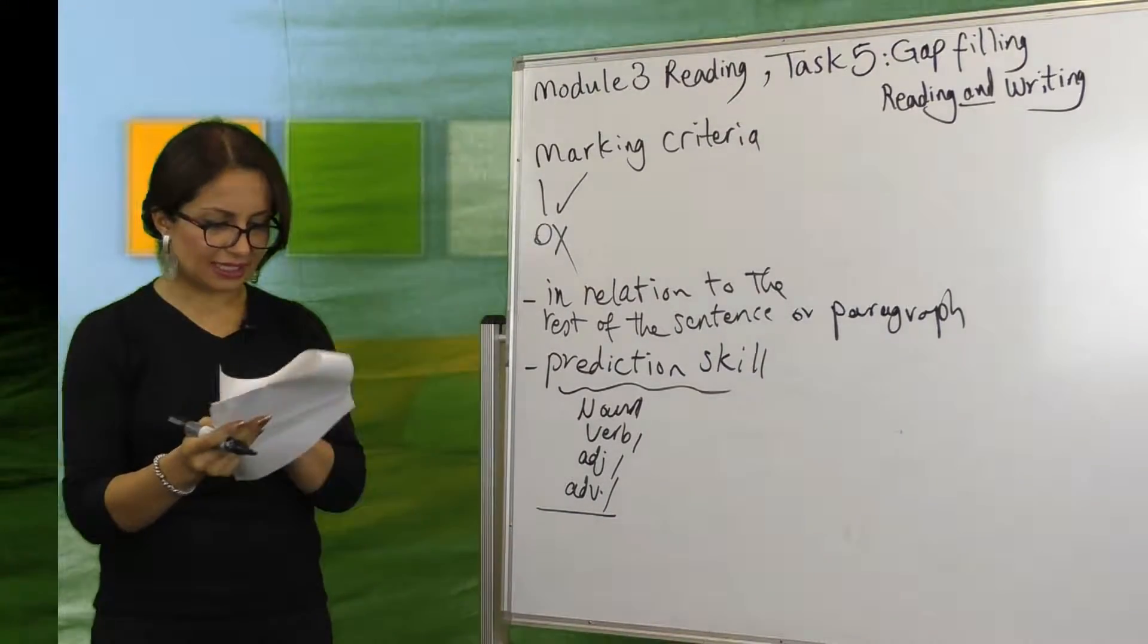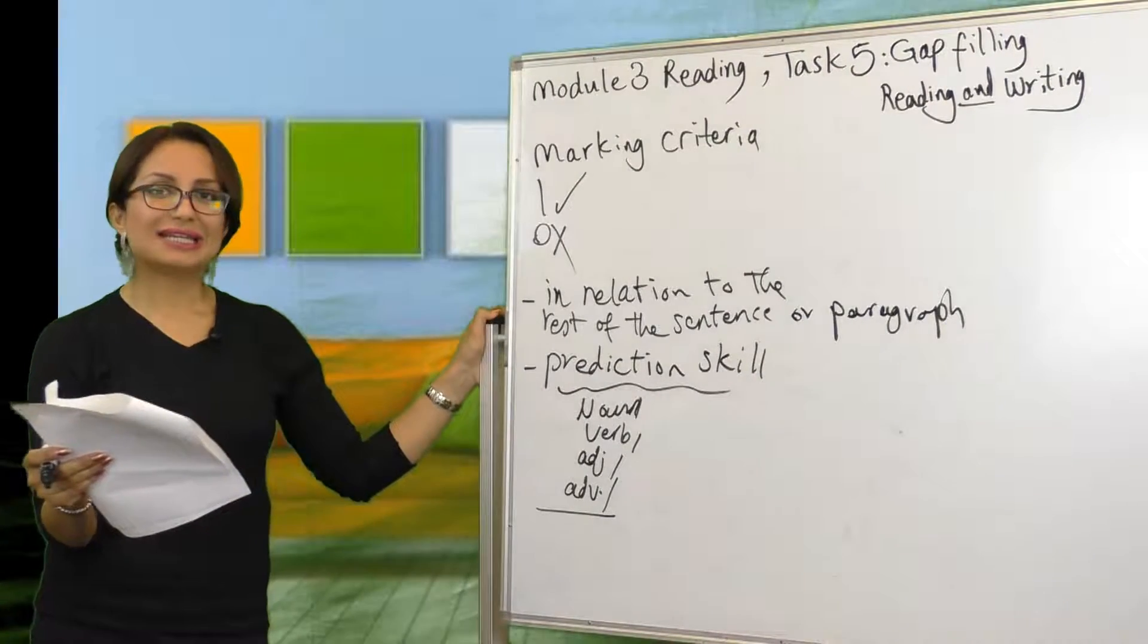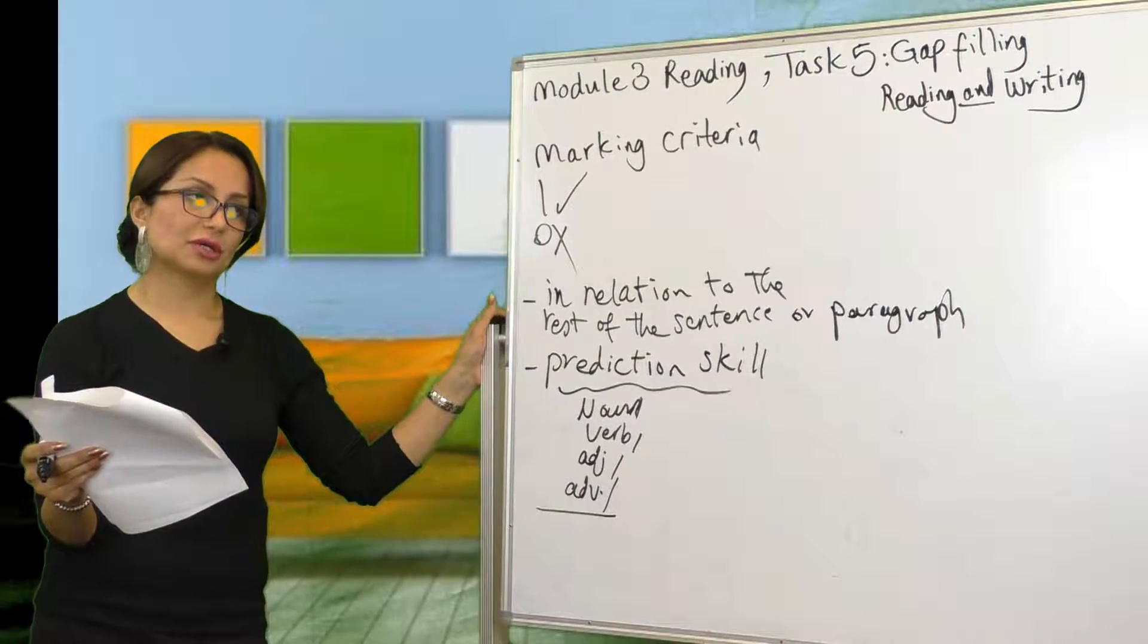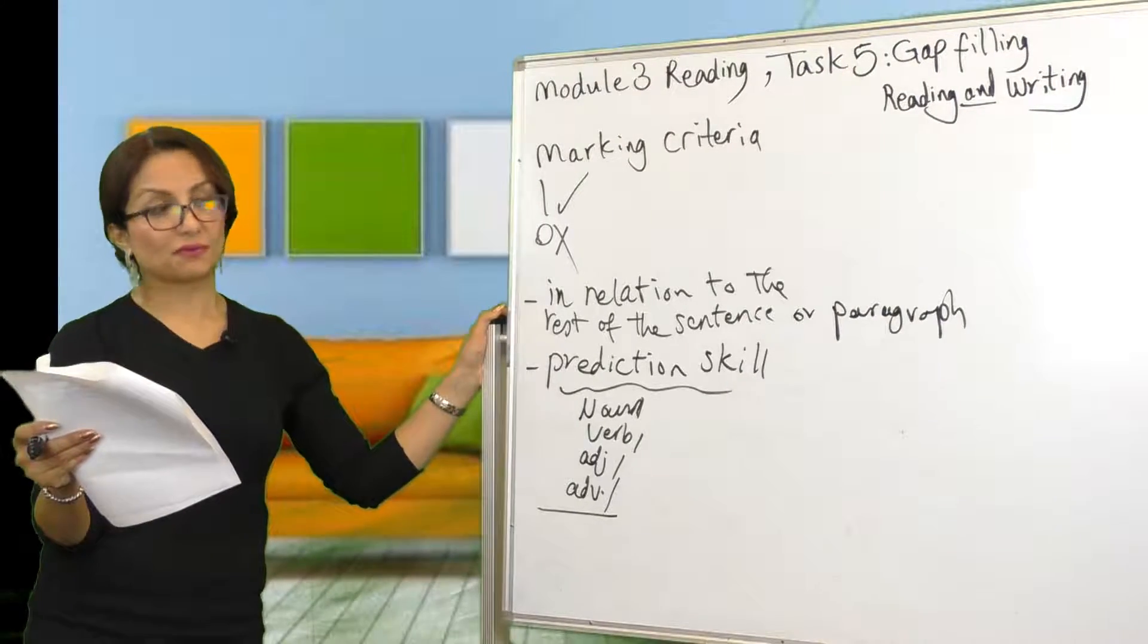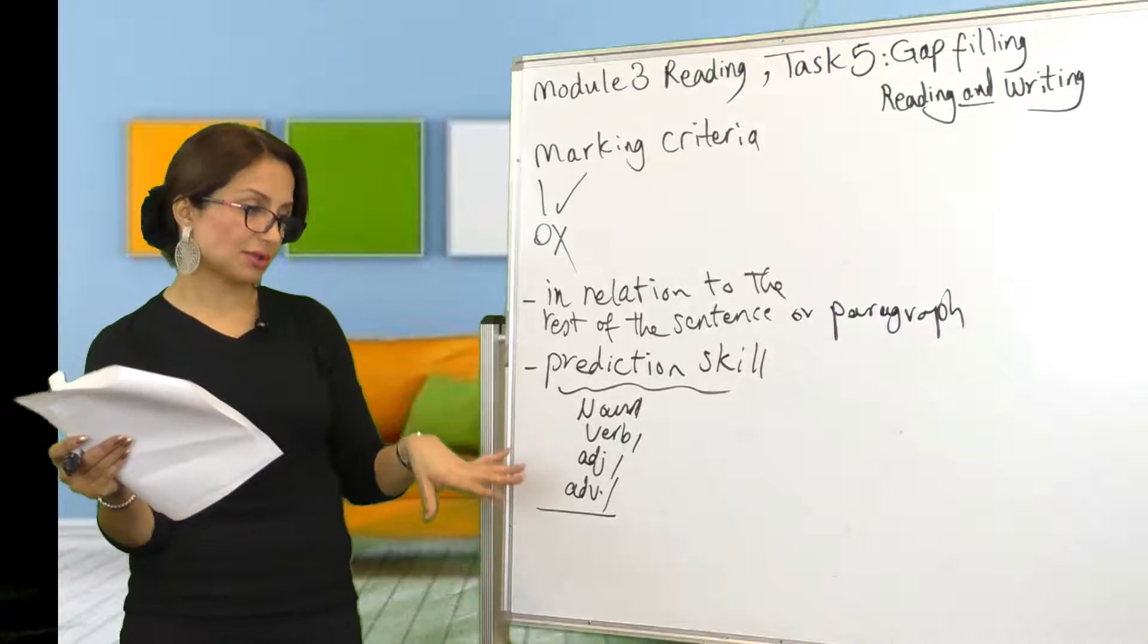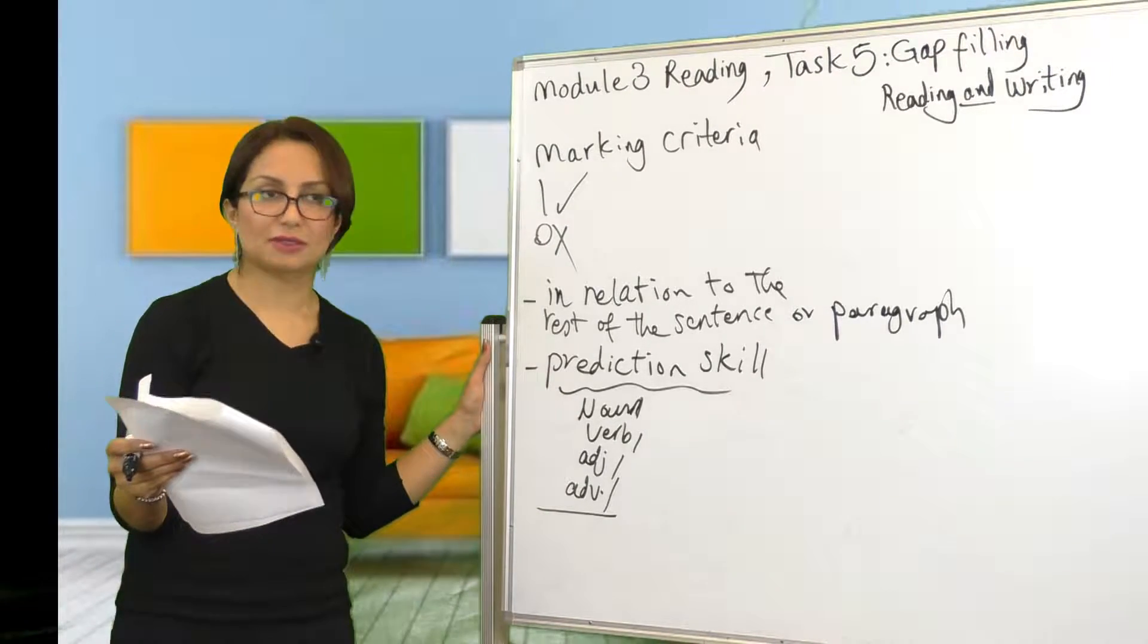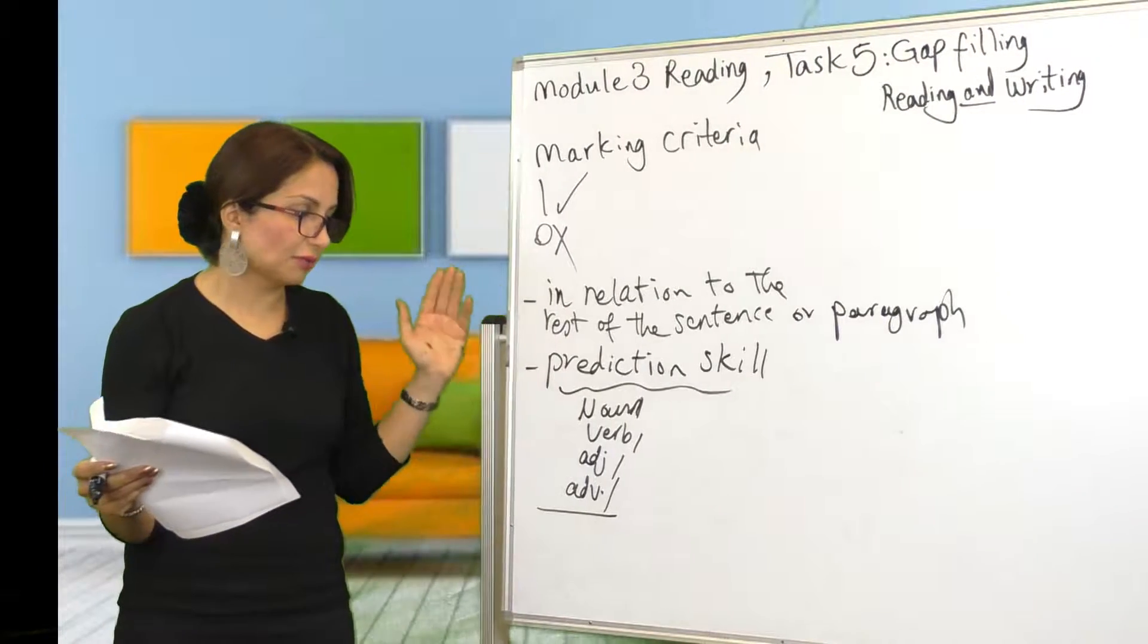What's really important is that for this particular test, the elimination technique doesn't work. I mean, you can say, for example, blank number four needs a verb, so one of them is a verb and three of them are nouns, so obviously I will choose the verb because the others are nouns. Elimination doesn't work for this one.